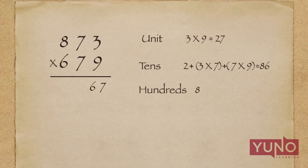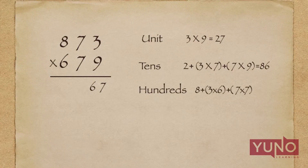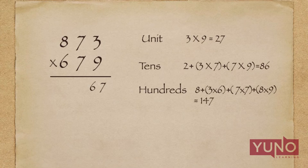In the next step, this 8 will be used as a carry and I will perform the cross multiplication of all three digits — that is 3 × 6, 7 × 7, and 8 × 9 — and add all these multiplications along with the carry. The total will be 147. I will write 7 in the answer and 14 will be the carry.